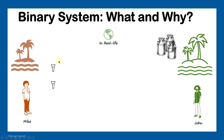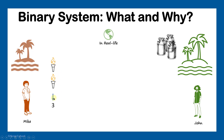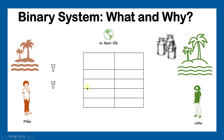Mike came up with another interesting idea. He told John he's going to use two torches and asked John to look at them at night. If both are off, that means John doesn't want milk. If the first one is on and the second is off, that means he needs one can. If the second is on and the first is off, that means Mike wants two cans. If both are on, that means Mike wants three cans. John was very happy with this system because he only has to distinguish between two states — on and off.